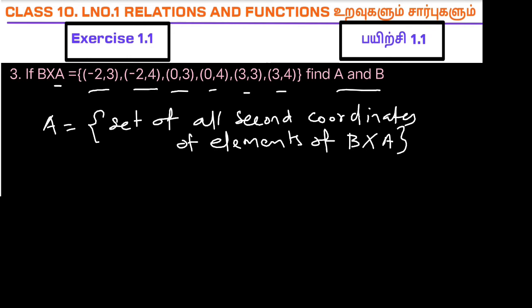So set A will be 3, 4. Set A will be 3, 4. Therefore, A = {3, 4}.